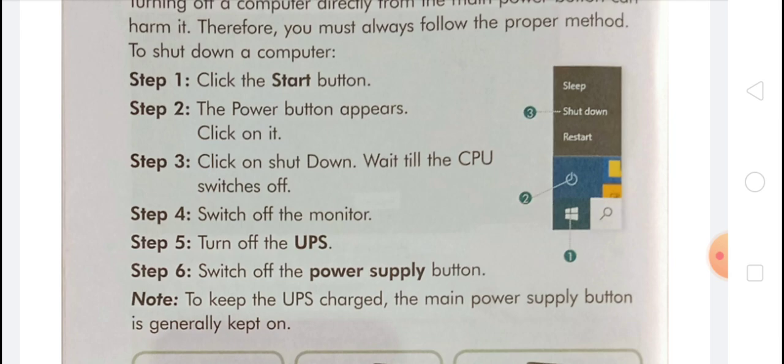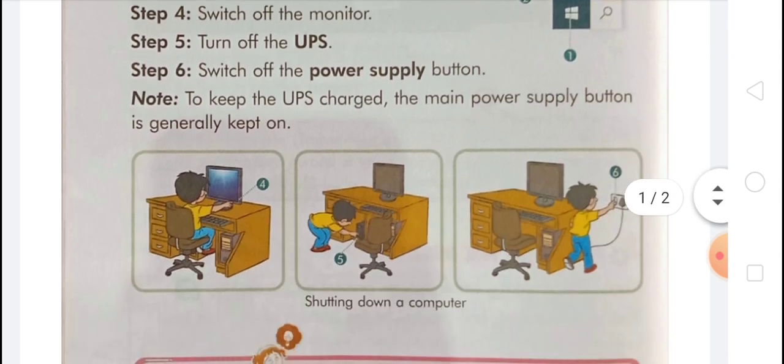Note: to keep the UPS charged, the main power supply button is generally kept on. Let's revise once more. In step 1, click the start button. In step 2, the power button appears — click on it. In step 3, click on shut down. Wait till the CPU switches off. In step 4, switch off the monitor. In step 5, turn off the UPS. In step 6, switch off the power supply button. To keep the UPS charged, the main power supply button is generally kept on.